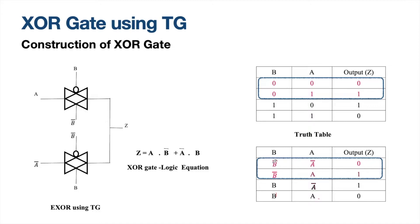Now let us club these two together. When we consider the first two combinations, B_bar is common. We need to check what is the input and what is the output. B_bar becomes a control signal — B and B_bar are the control signals. Whatever is in input A, we want it at output Z. Looking at the table: if A is 0, output is 0; if A is 1, output is 1. So whenever the control signal B equals 0, whatever is in A should be carried to output Z.